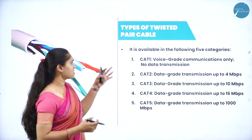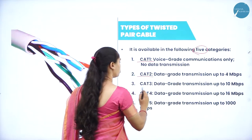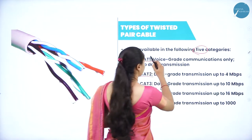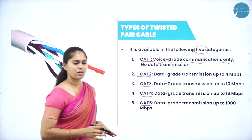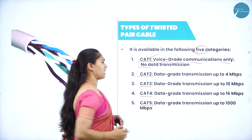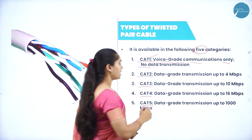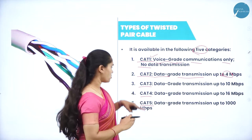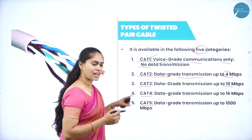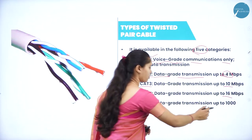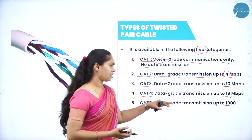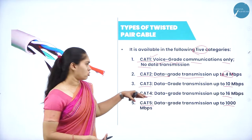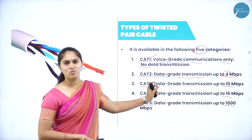UTP is categorized into 5 types based on data grade transmission rate. Category 1 is voice grade only — it transmits voice but not data. Category 2 supports up to 4 Mbps. Category 3 supports up to 10 Mbps. Category 4 supports up to 16 Mbps. Category 5 supports up to 1,000 Mbps.